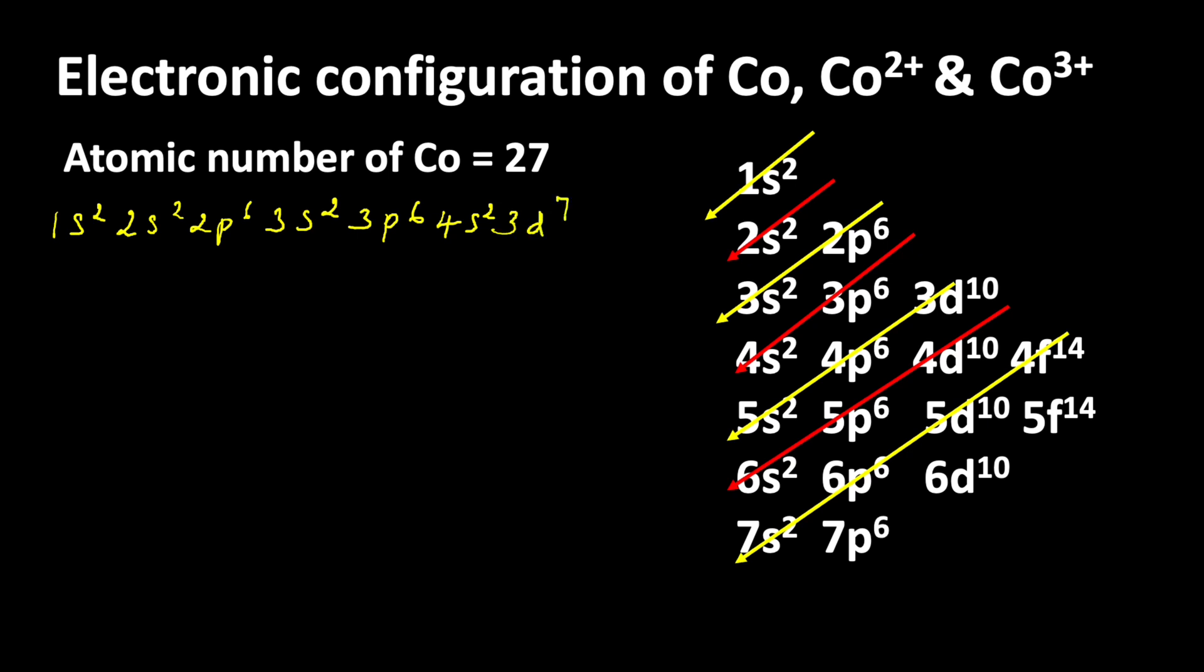This is the general electronic configuration of d-block elements: (n-1)d¹⁻¹⁰ ns⁰⁻². It means first we are writing the inner orbitals, then the outer orbitals. So we need to write the 3d orbitals first, then the 4s orbital. Now we make that necessary change: 3d⁷ 4s².